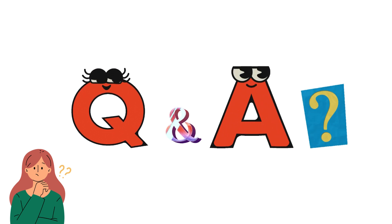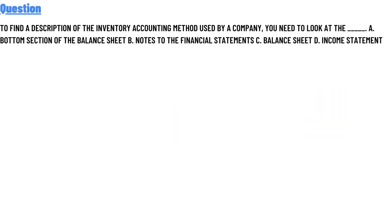Today's question is: to find descriptions of the inventory accounting methods used by a company, you need to look at which option? Option A: bottom section of the balance sheet. Option B: notes to the financial statements. Option C: balance sheet. Option D: income statements. The correct answer is Option B.